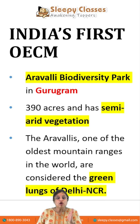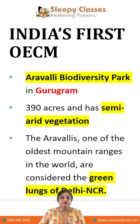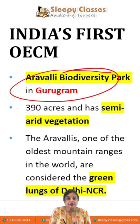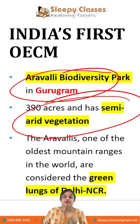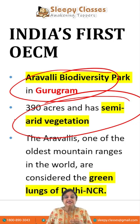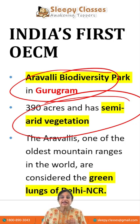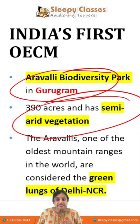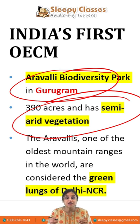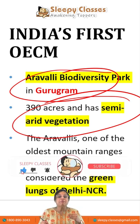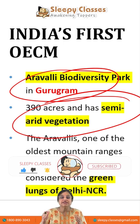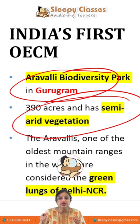India's first OECM is Aravalli Biodiversity Park in Gurugram, where you can see semi-arid vegetation. It is considered the green lungs of Delhi NCR because it provides so much oxygen. This is an area where mining was previously used, but with the help of local communities and corporates, it has been conserved, making a variety of native species thrive.